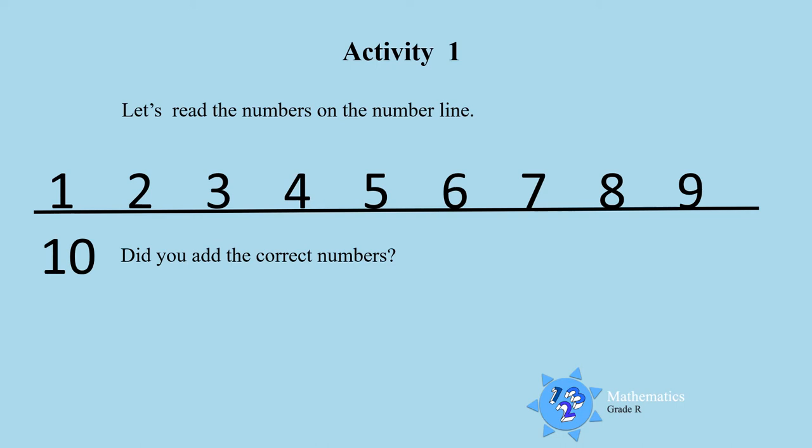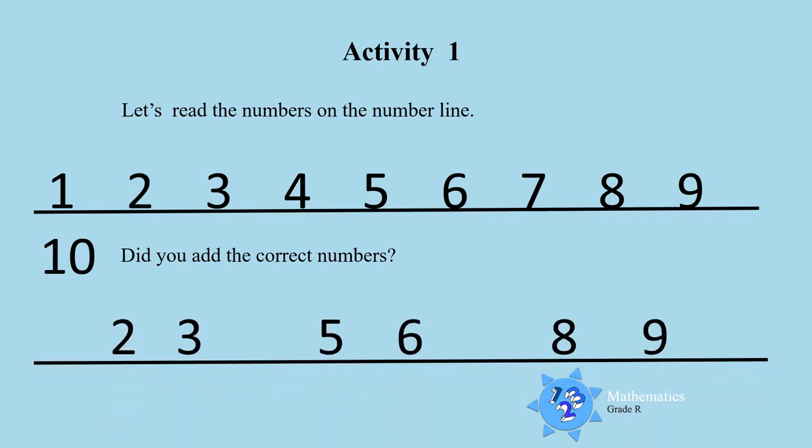Now let's see if you added the correct numbers. Activity 2. Look at the following number line. Which numbers are missing? Did you add the correct numbers? Yes, number 1, number 4, number 7 and number 10. Excellent work boys and girls.